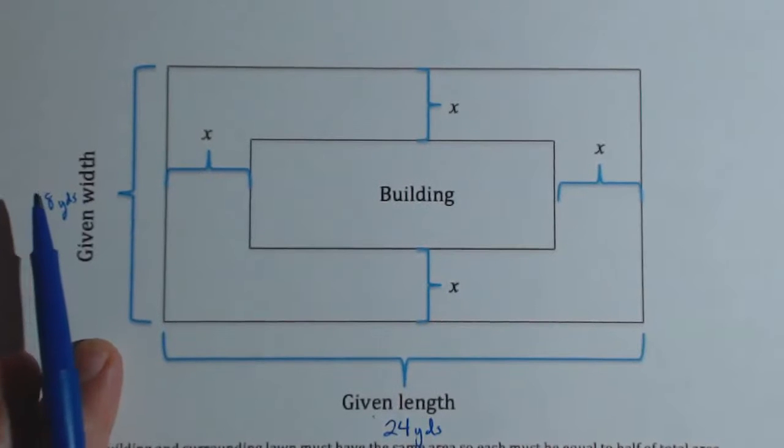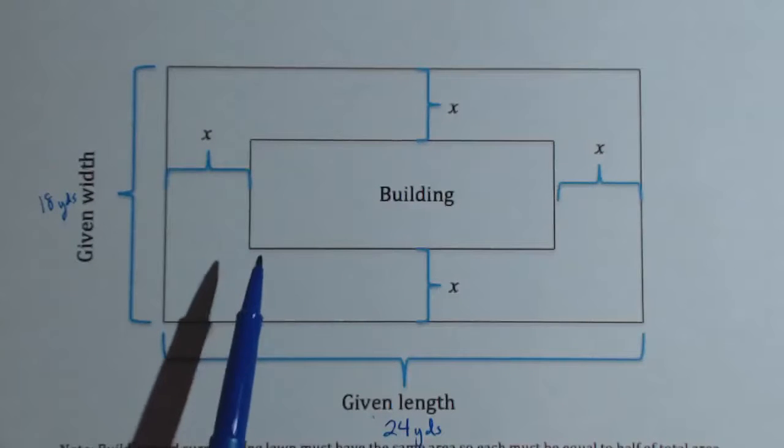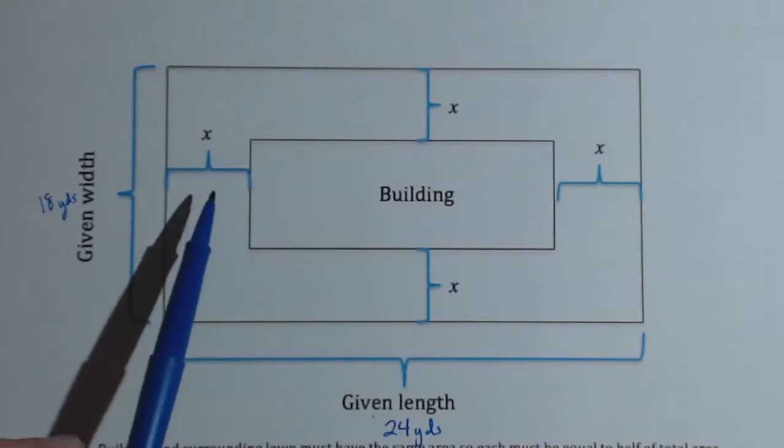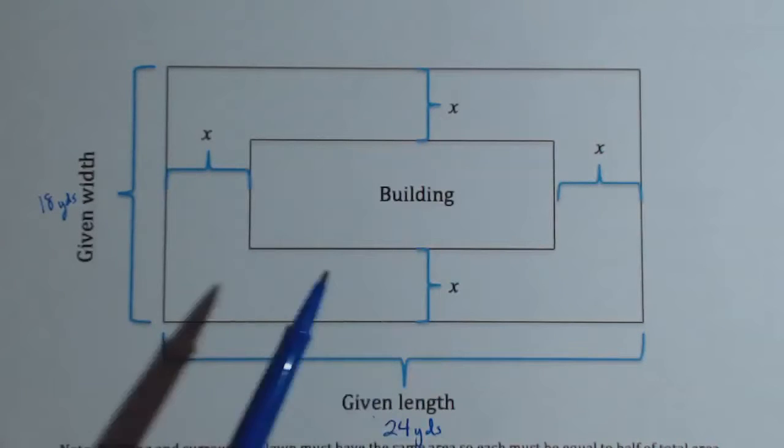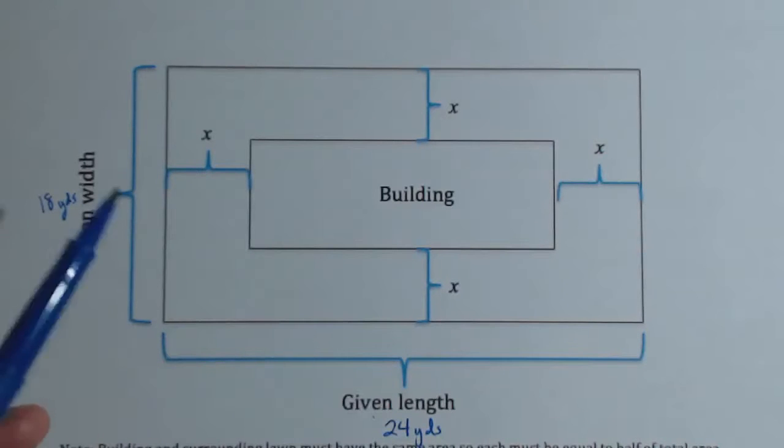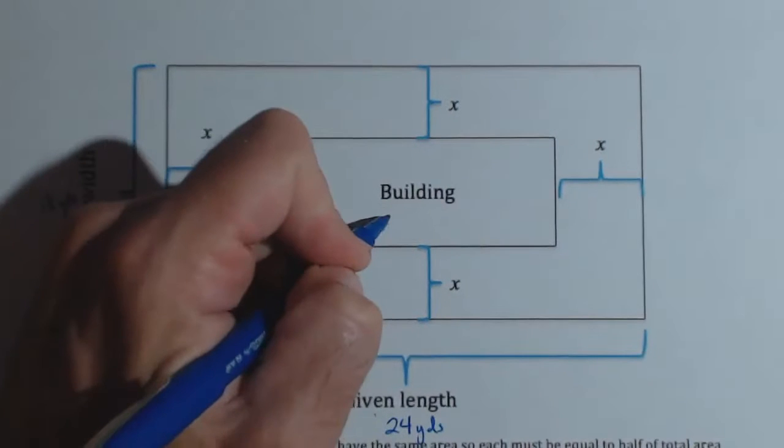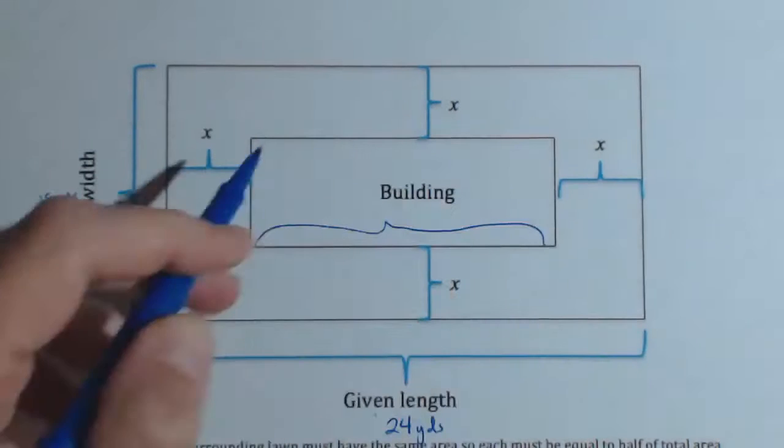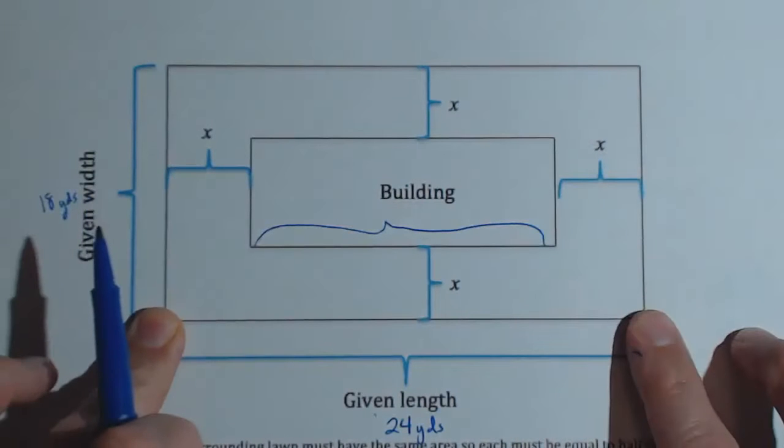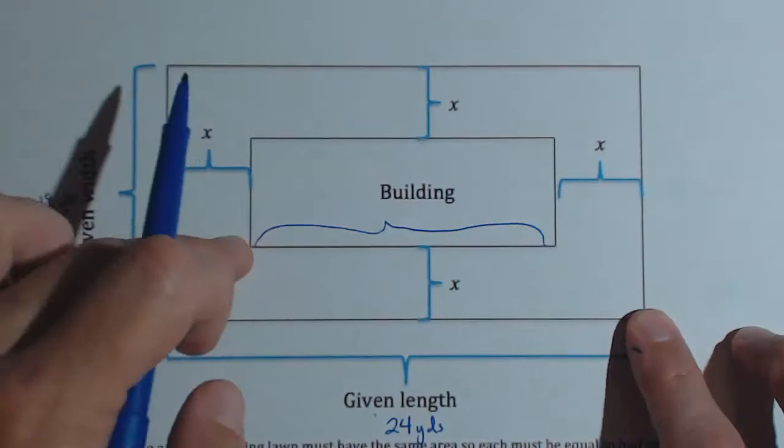So the easiest way is by marking these all X, we can now build a model of our situation. Because if we look at this length of the building here, well, we know that from here to here was 24, we're taking off X on this side and X on this side, this is 24 minus 2X.